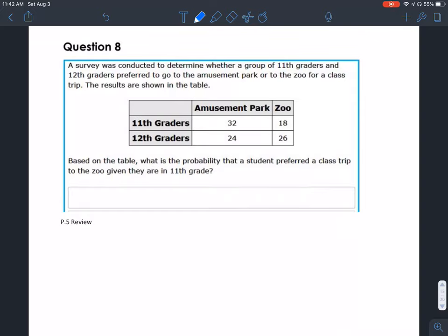Based on the table, what is the probability that a student preferred a class trip to the zoo given that they were 11th graders?